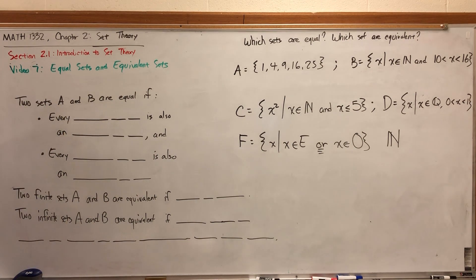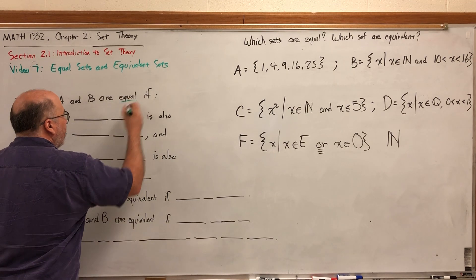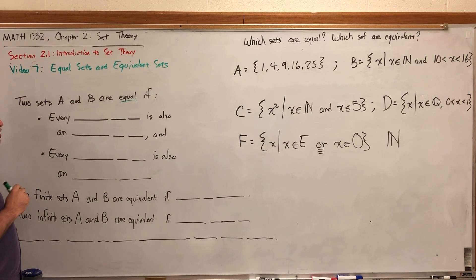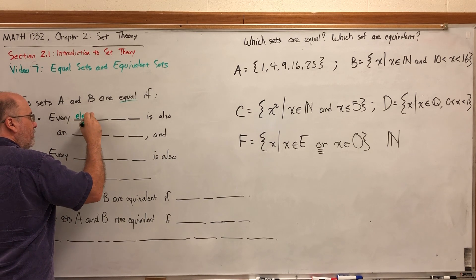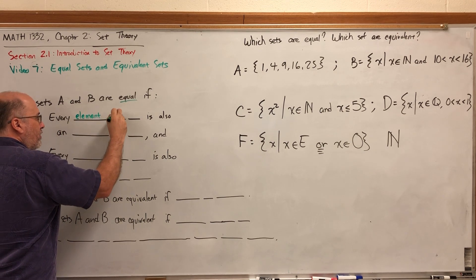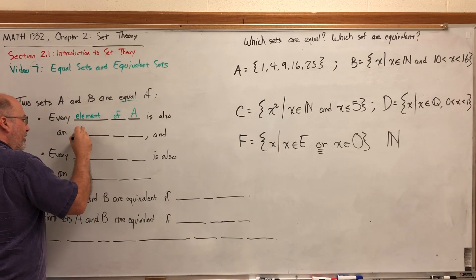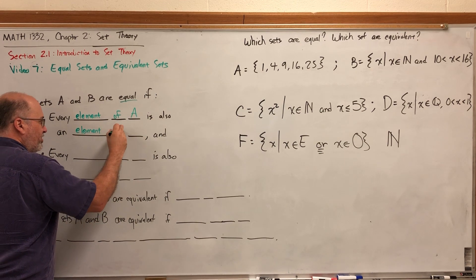Let's start with definitions. Two sets A and B are equal if there are two conditions, but they're very similar. Condition number one: every element of Set A is also an element of Set B.